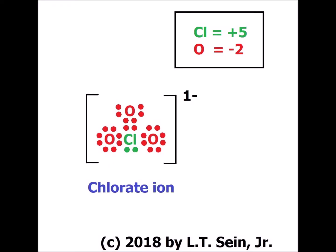Chlorate ion is the conjugate base of chloric acid. Notice that when we go from the acid to the conjugate base, the oxidation number of chlorine is exactly the same in the conjugate base as it was in the original acid.